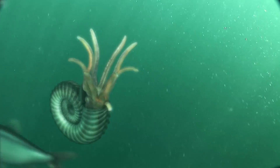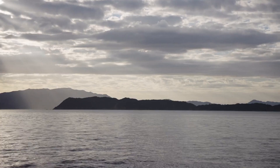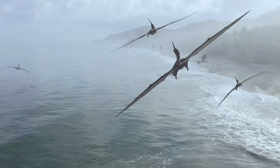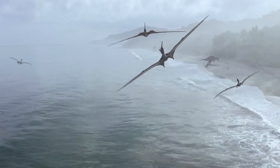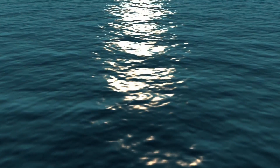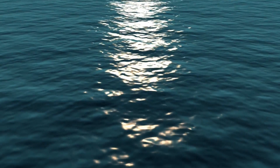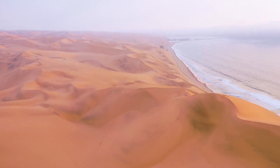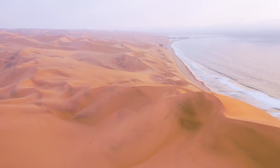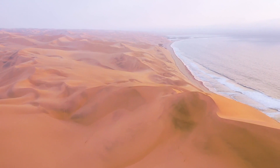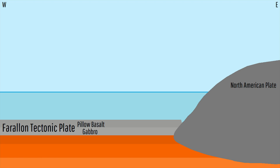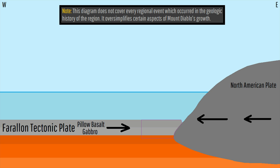Approximately 165 million years ago, during a time when what is now California's central valley was filled with the sea and dinosaurs roamed the planet, the first rocks in Mount Diablo began to form. At the time, offshore of the state, a new tectonic collision was about to begin. There, the newly formed Farallon tectonic plate developed, causing a mass of recently erupted pillow basalt on the ocean floor to head towards the east.